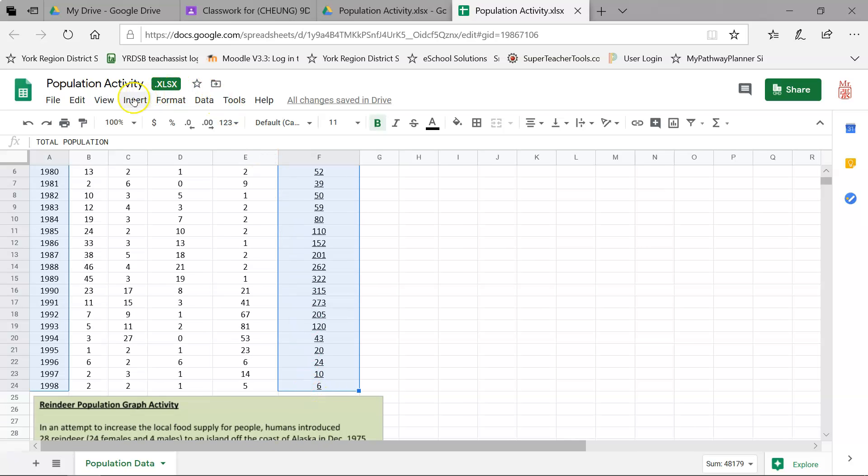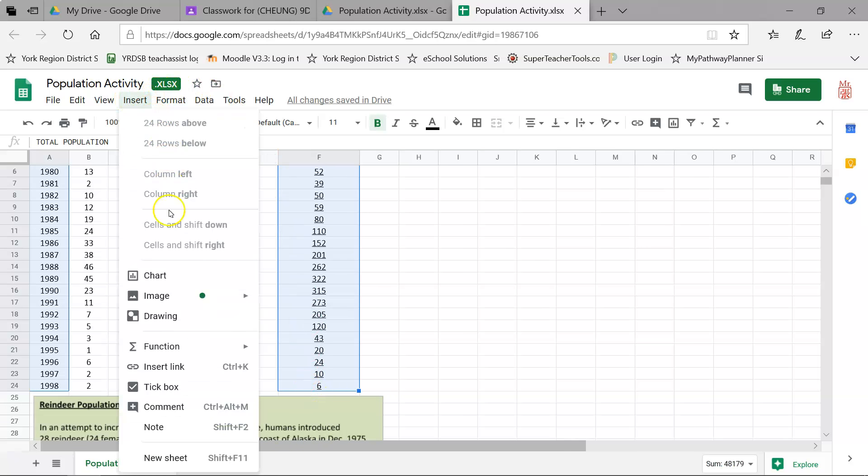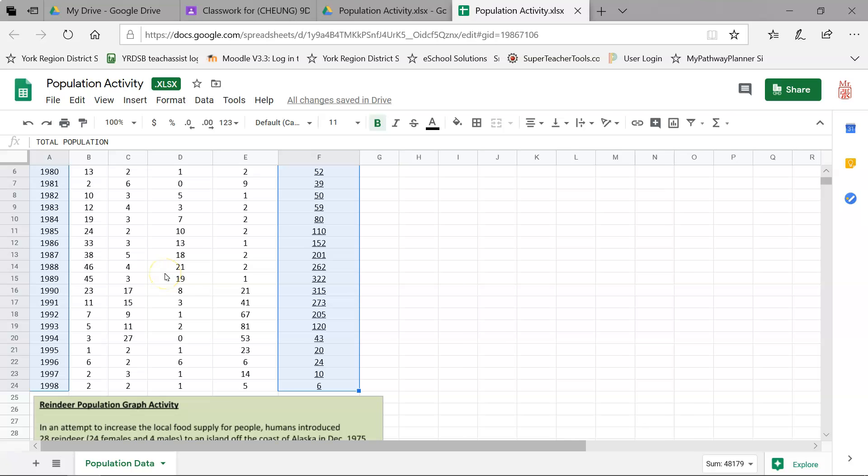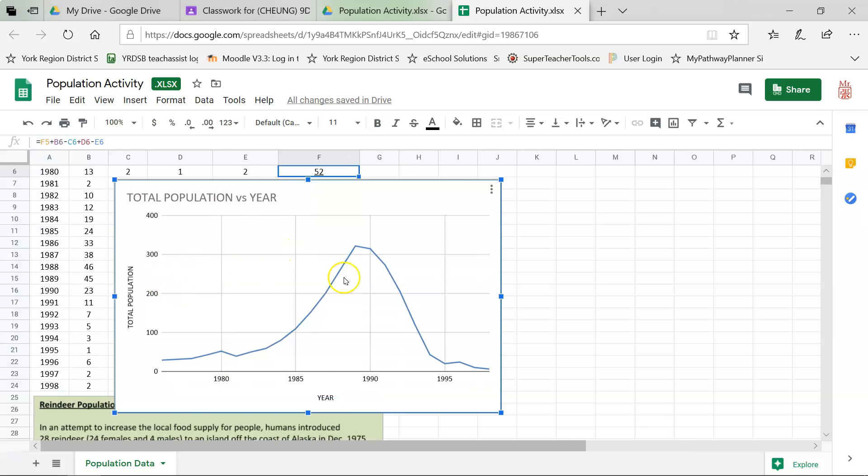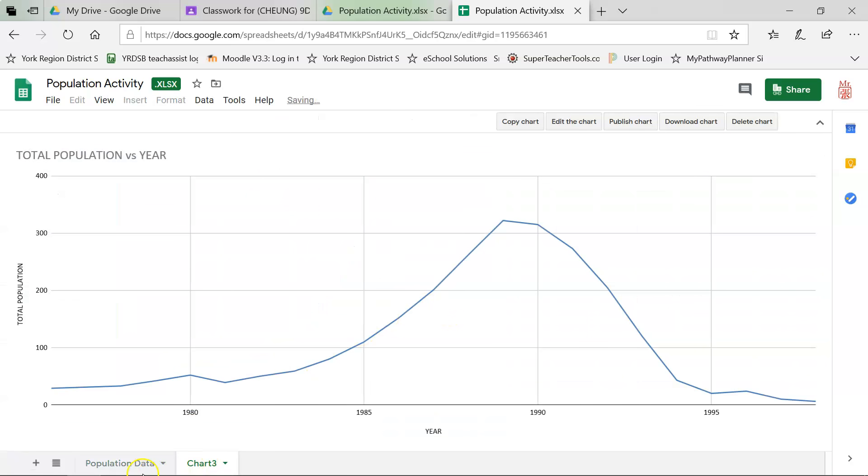Now what I'm going to do is I'm going to insert and click chart. And it will graph it for me. So here's the graph that it's created. I don't like it just floating around like this. So I'm going to click three dots over here. And then I'm going to say move to own sheet. And now open it up as its own chart. I'm going to double click this and say graph.